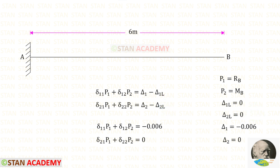Let us find δ1. Our first coordinate is RB, which is a vertical reaction, so we have to consider the settlement. At point B there is a settlement of 0.006 meters. It is downwards, so it should be negative. Now let us find δ2. Our second coordinate is moment MB, so we have to take the rotations. At point B there is no rotation, so δ2 will be equal to 0.